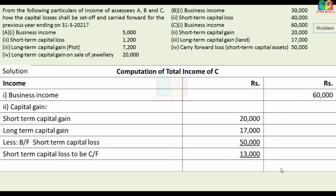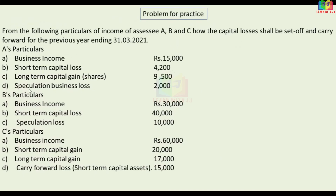Now for a practice problem. This involves business income, short-term capital loss, long-term capital gain, speculation business loss, and speculation income. The short-term capital loss can be adjusted against long-term capital gain, and the business income will be computed accordingly. Speculation loss can be adjusted against speculation income.